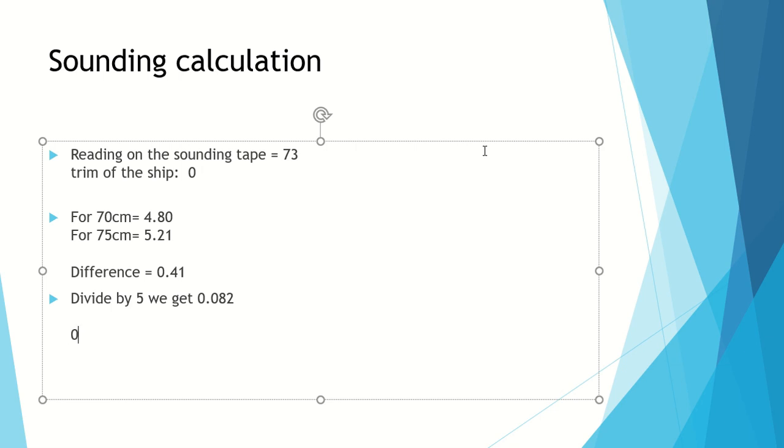We need the value for 73 centimeters, so we will multiply this 0.082 by 3, so we will get 0.246 meter cube. Now this is for three centimeters. Now we will add this to the value of 70 centimeters which is 4.80.